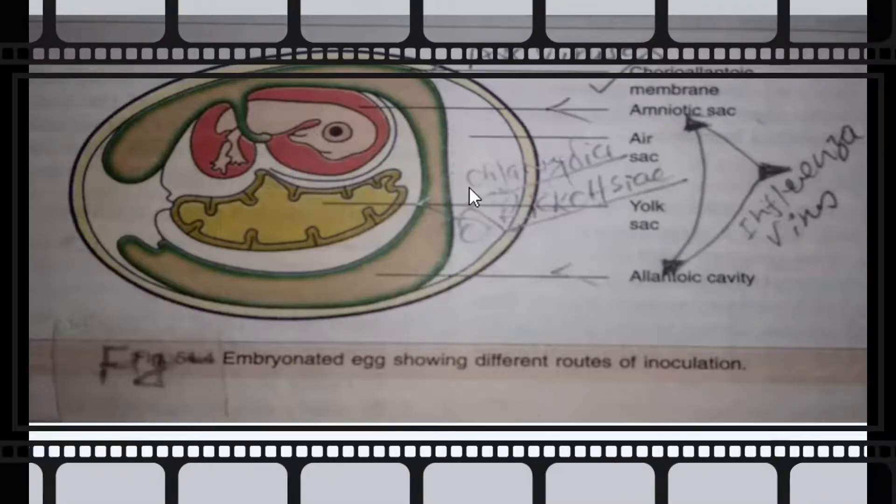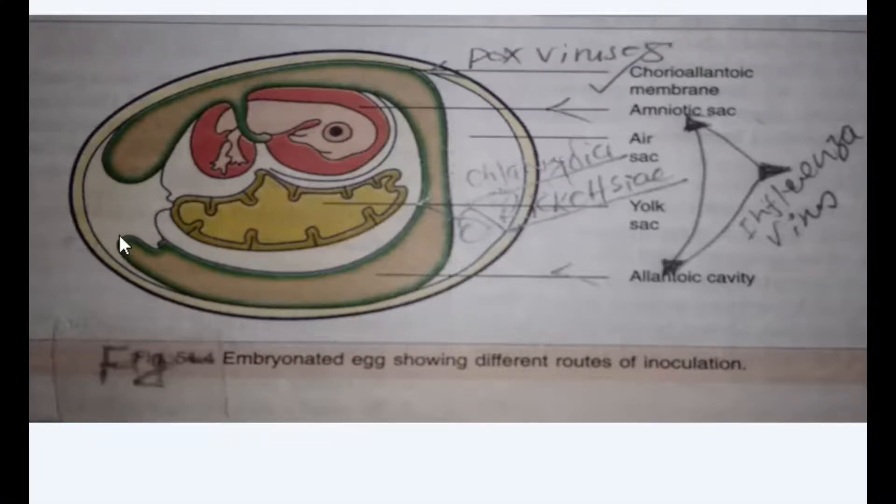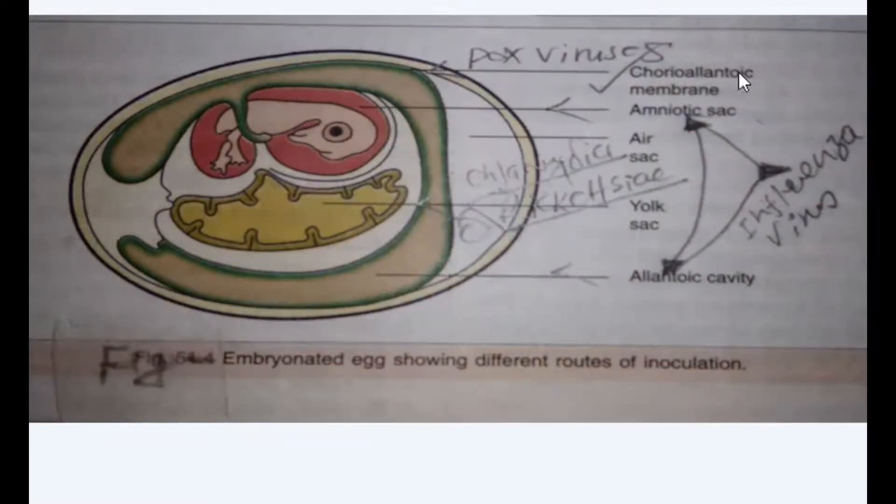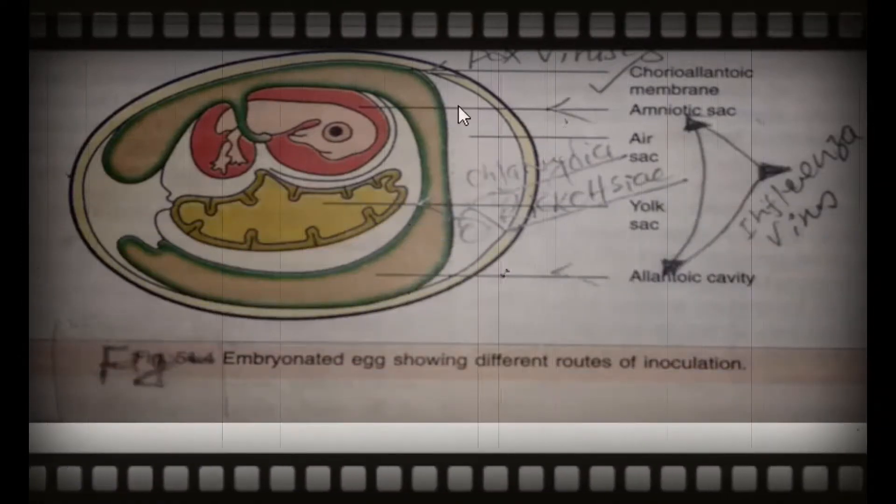Hi, today we are concerned with egg inoculation. So here we can see this is the embryonated egg showing different routes of inoculation. Here you can see this one is the chorioallantoic membrane, in brief CAM. This site for pox virus.